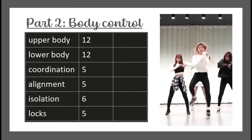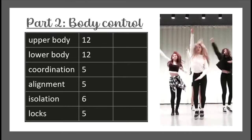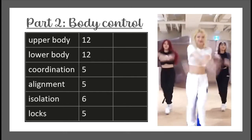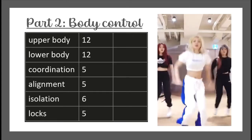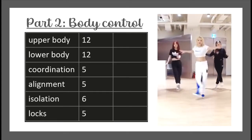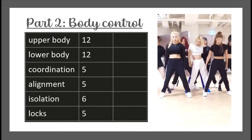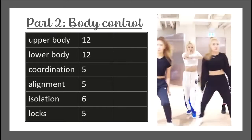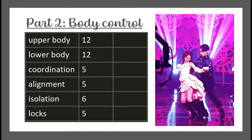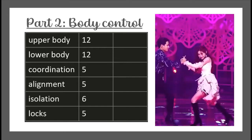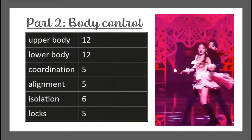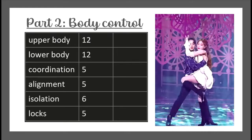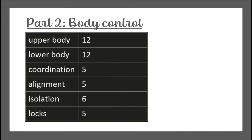Footwork is the main criteria in lower body control, but it also includes leg alignment, strength, proper execution, no sloppiness nor stiffness, and extended hips. Upper body and lower body have the most points, but everything is connected — if you have hunched shoulders, it would affect your body alignment, upper body control, and coordination. So yes, I look at everything. Part 2 is weighted 45%, meaning you can earn a maximum of 45 points.